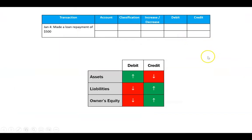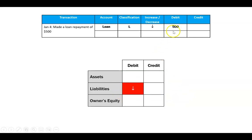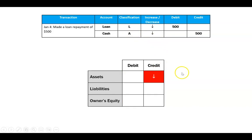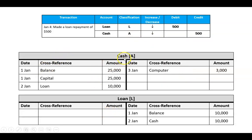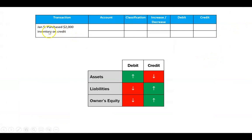January 4th: making a loan repayment. The loan liability is decreasing — I don't owe as much — and a liability decreasing is a debit. To pay the loan I give up cash, which is an asset decreasing — that's a credit. I enter January 4th with a debit of $500 in the loan ledger, and a credit of $500 in cash. Cross-references: in loan I write 'cash,' and in cash I write 'loan.'